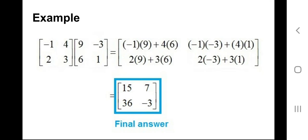First, we multiply the first row of the first matrix with the first column of the second matrix: −1×9 plus 4×6. Then the first row with the second column: −1×(−3) plus 4×1.